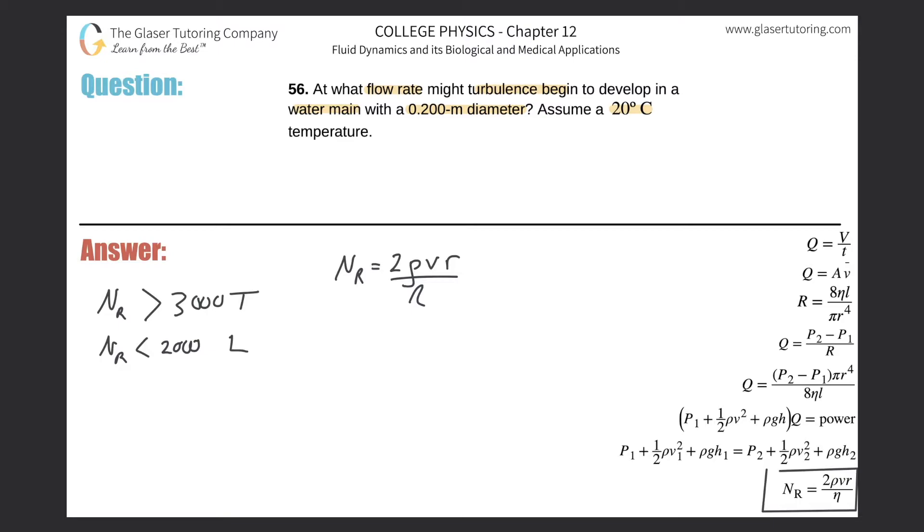Now the thing is, we're trying to find out at what flow rate. And we're looking at this and we're saying, huh? What? Flow rate? Where is Q in here? Well, Q is not in there. Okay, but we have to think about what variable could we get Q into?